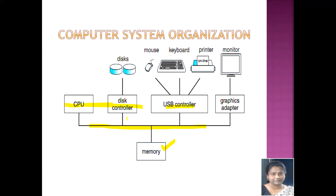What is the purpose of these device controllers? For example, the disk controller is in charge of a specific type of device — the disk. This controller is in charge of disk drives such as audio devices or video displays. The USB controller is in charge of various input and output devices such as mouse, keyboard, and printer.